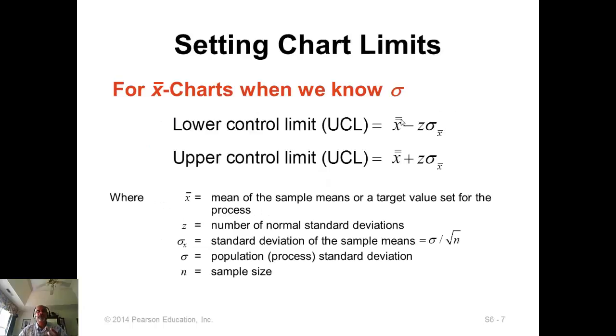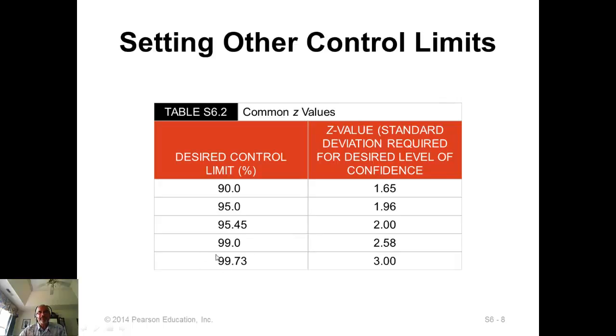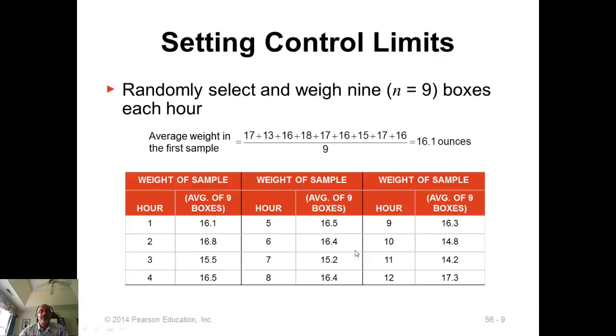Now there are two formulas that we will use for control charts for X-bar. The first case is when we know the value of sigma. This is not usually available to us, so this formula is kind of an exception. You don't use this formula very often. But if you know the value of sigma, in some instances provided by the manufacturer of the machine, then you can use this formula. The lower control limit looks like a confidence interval: X double bar minus Z. Remember, this is where we will use 3 for 99.7% or 2 for 95.45%. But unless otherwise stated, you will assume 99.73% interval and use 3 here.